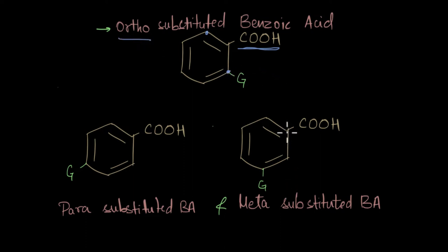When there is a group attached to the third position to the carboxylic carbon, we say it's the meta position. And when the group is attached at the fourth position relative to the carboxylic carbon, we call that para substituted benzoic acid.